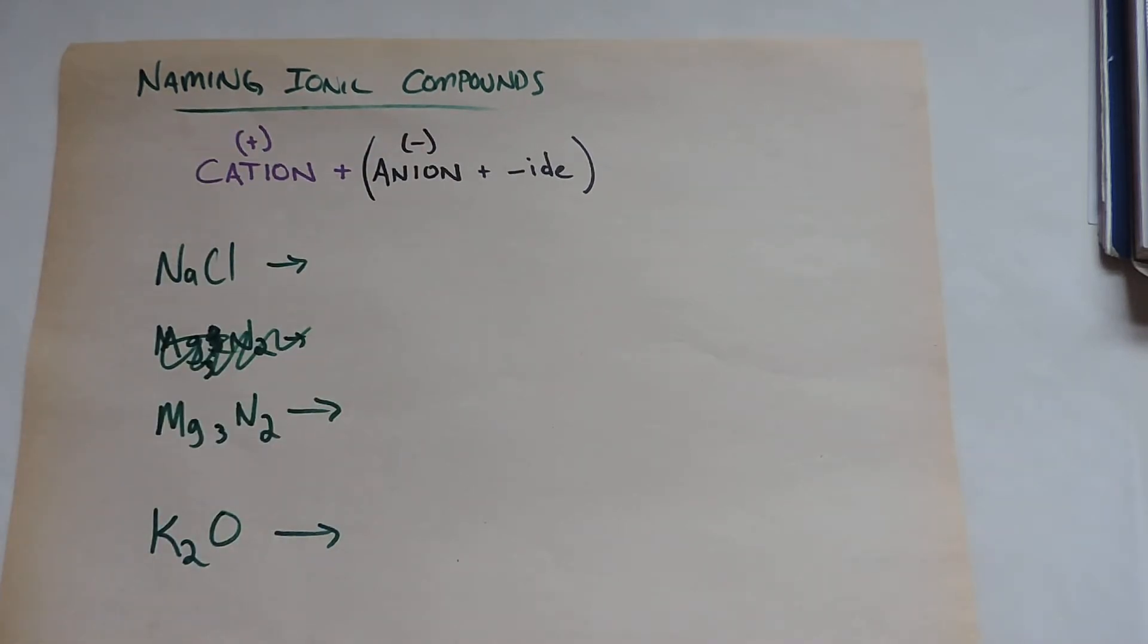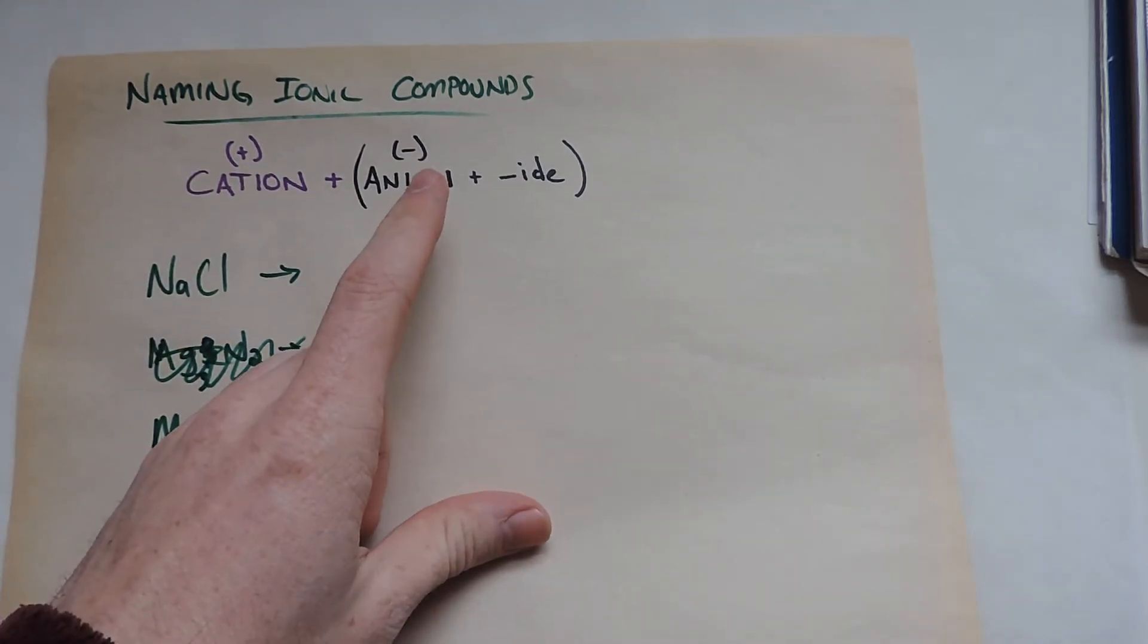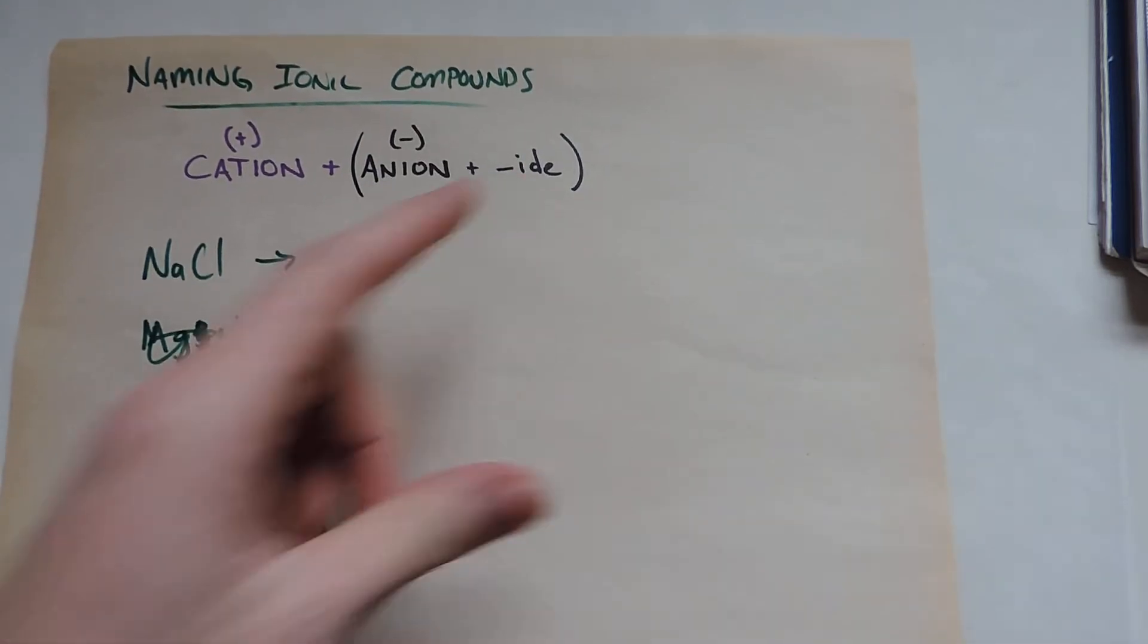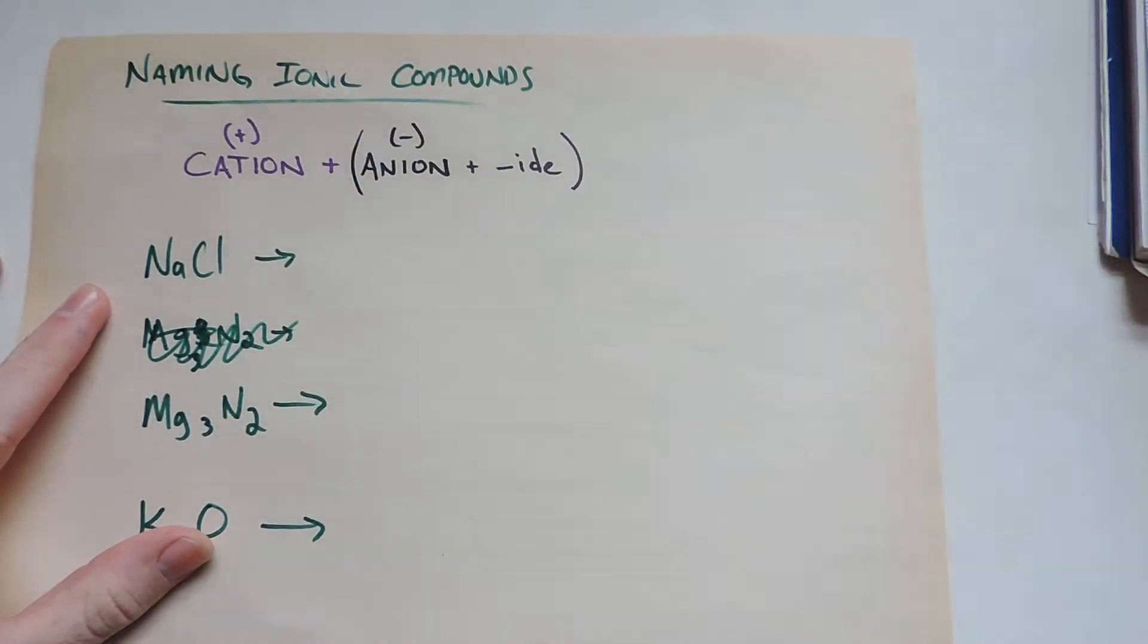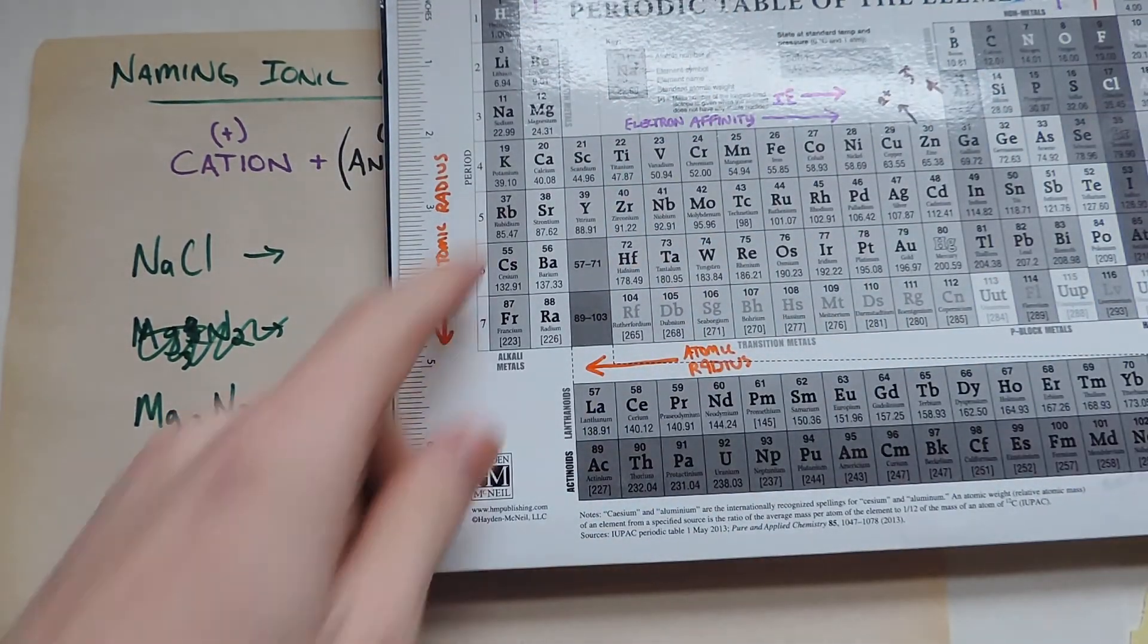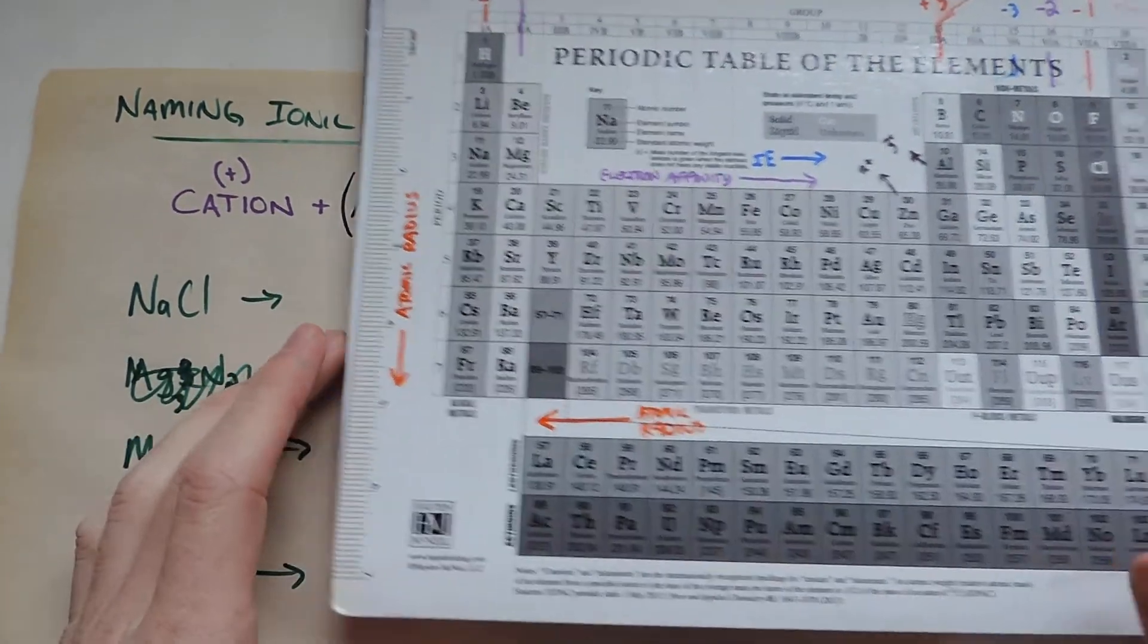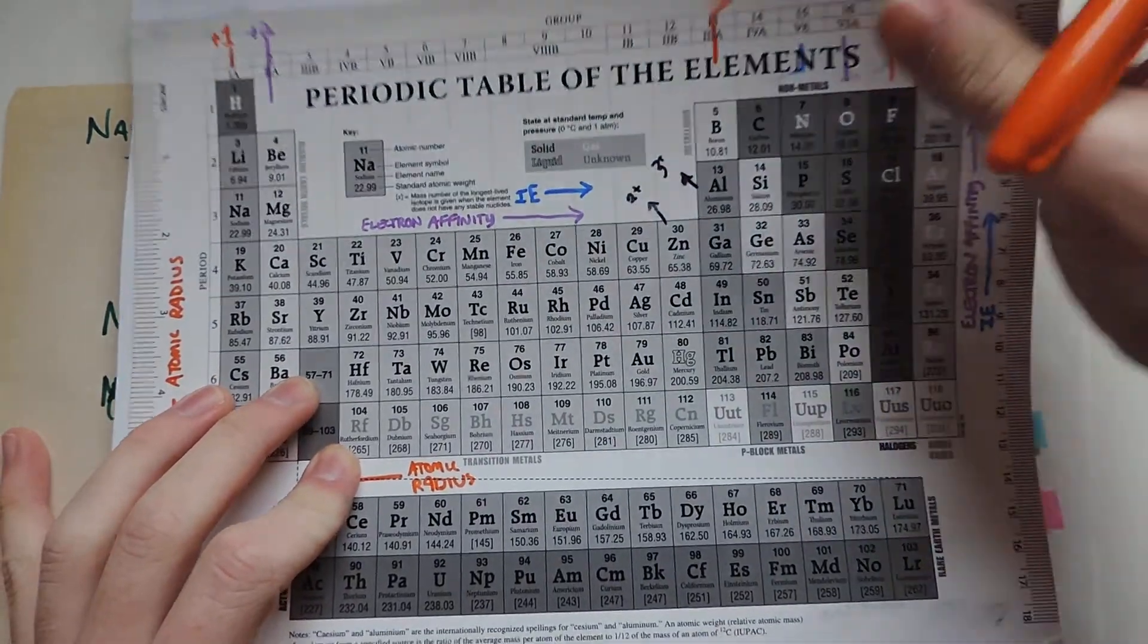So for naming ionic compounds like these, this is very easy. All we do is we name the cation, which is positive, and then we name the anion, but we truncate the end and we insert -ide at the end. So this first one, we go to our periodic table and we see that's sodium, which is a plus one, and then that's chlorine, which is a minus one.